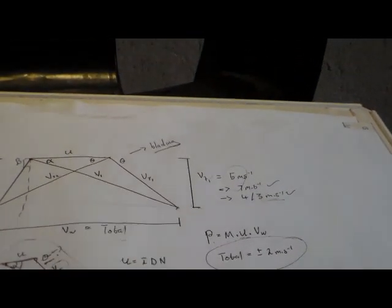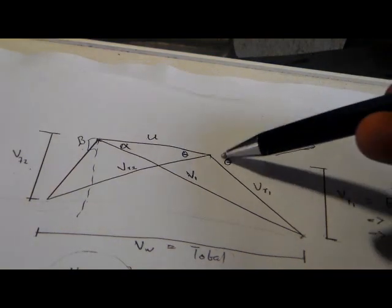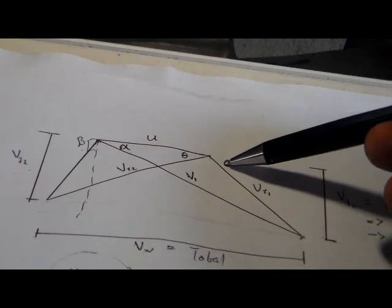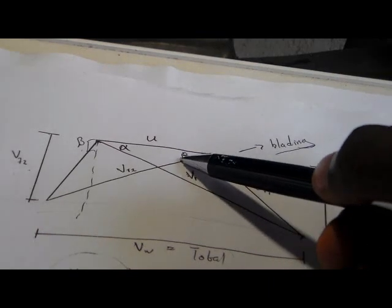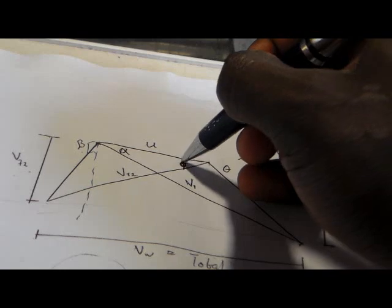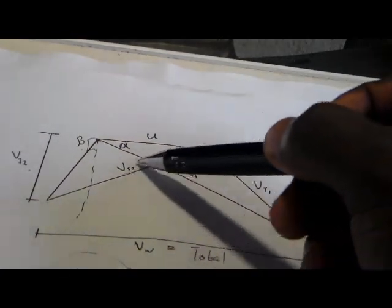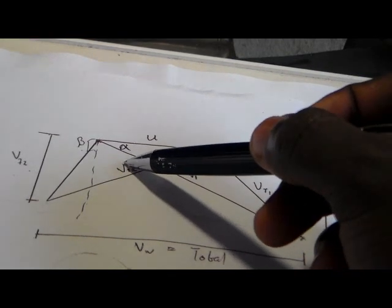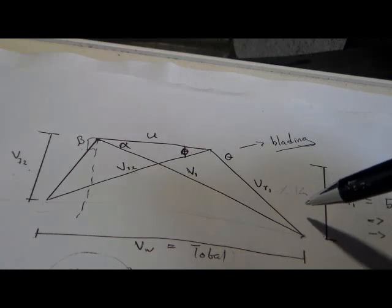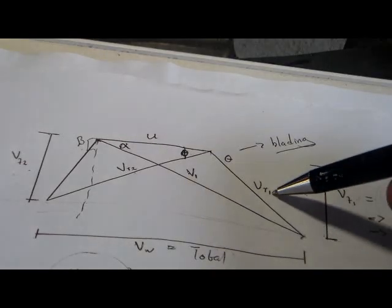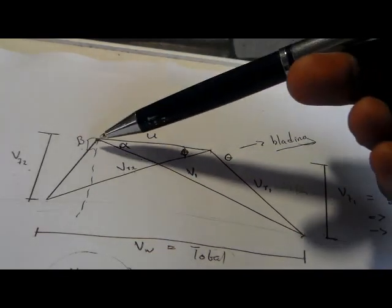Let's recap the velocity diagram. The right-hand side is your inlet triangle. On the blade, we have an inlet blade angle, which goes with the inlet relative velocity VR1.